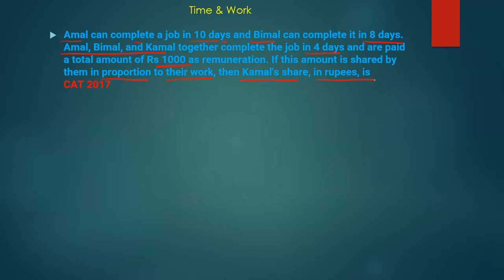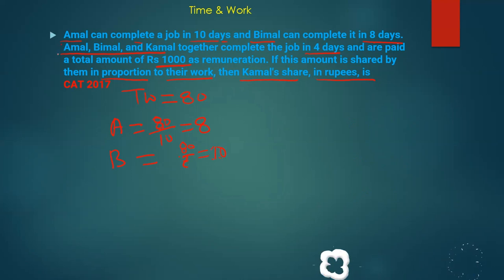First, we will assume total work using the LCM method. Total work = 80 units. Amal's efficiency = 80 divided by 10 = 8 units per day. Bimal's efficiency = 80 divided by 8 = 10 units per day. Amal, Bimal, and Kamal together complete the job in 4 days, so their combined efficiency = 80 divided by 4 = 20 units per day.